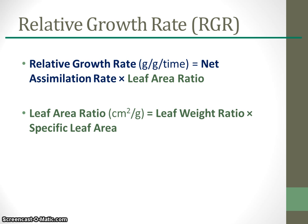NAR is often expressed in grams per square centimeter per time, times the leaf area ratio, or LAR, which is the total area of leaves per plant weight in square centimeters per gram. The leaf area ratio, LAR, is calculated as the leaf weight ratio, or LWR — the total weight of leaves per plant weight — times the specific leaf area, or SLA, which is the total area of leaves per weight of leaves.